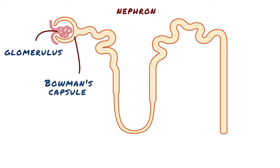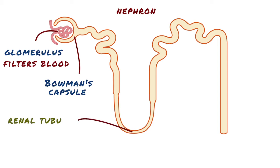The glomerulus is a tuft of filtering capillaries located at the vascular pole of the renal corpuscle in Bowman's capsule. Each glomerulus receives its blood supply from an afferent arteriole of the renal circulation. The glomerular blood pressure provides the driving force for water and solutes to be filtered out of the blood plasma and into Bowman's space.